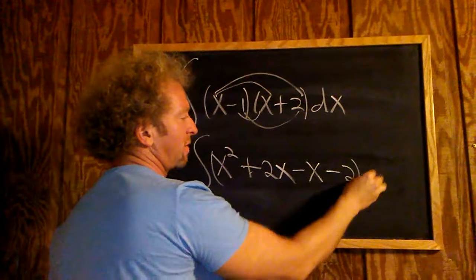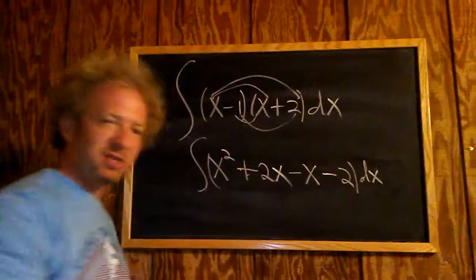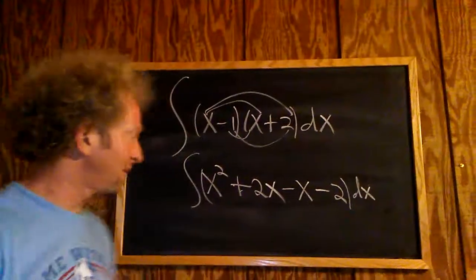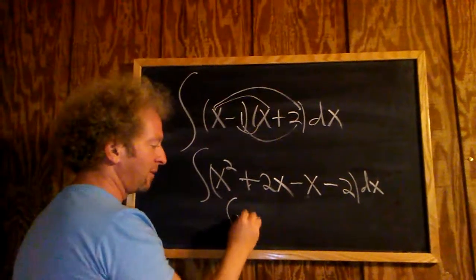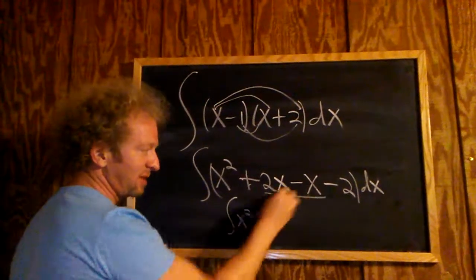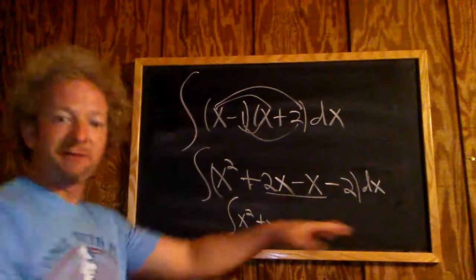And all of this is being integrated with respect to x. It looks like we can do some simplification before we actually integrate. So we have 2x minus x, that's x. So x squared plus x. This piece here is x.